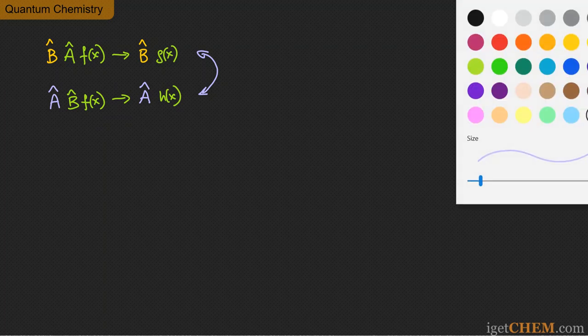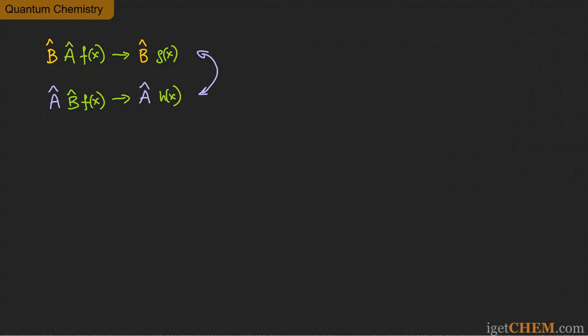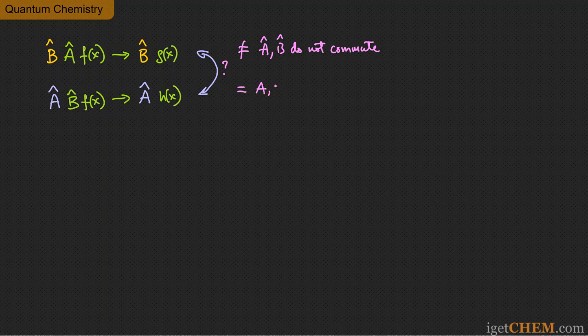The word 'commute' in quantum mechanics — and more generally in mathematics — is really asking: does the order of two operations matter? If it does not matter, then the operators commute. If the result of AB on f and BA on f are not the same, then A and B do not commute. If they are the same, then A and B are said to commute.